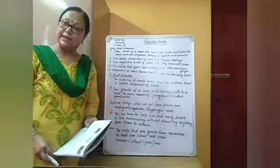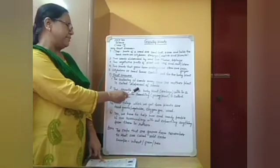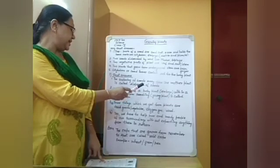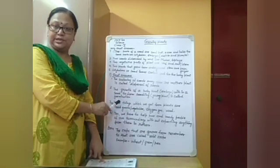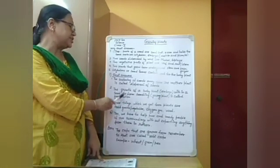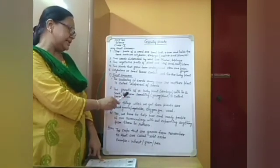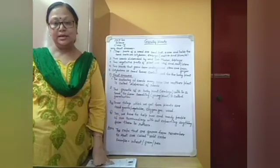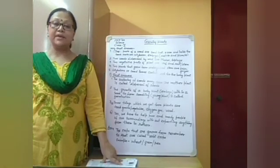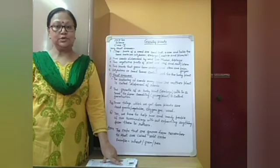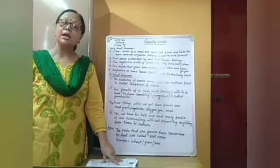Number two: what is meant by germination? Germination is the growth of a baby plant or embryo within a seed to form a seedling or young plant. You can also write the necessary conditions for germination: air, water, and sunlight. If these three conditions are available, seeds will germinate to form a new plant.